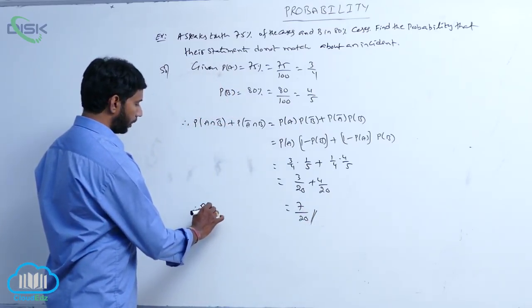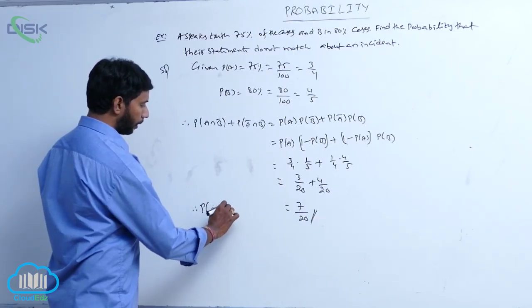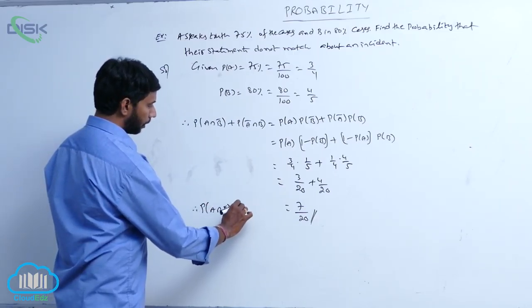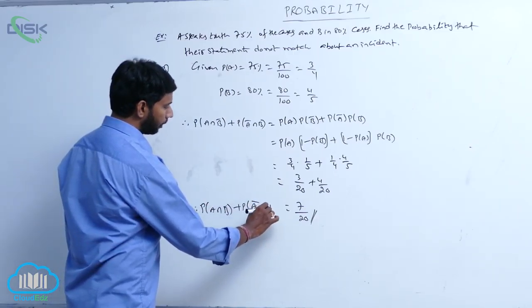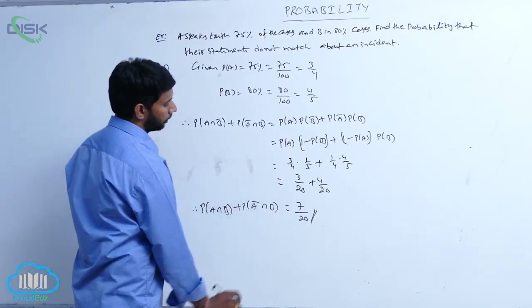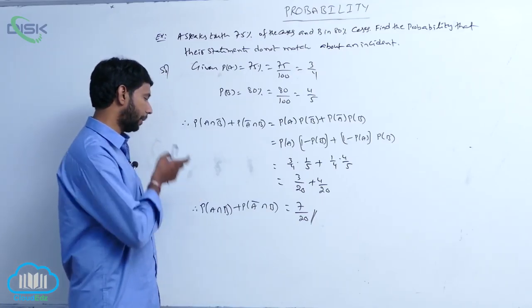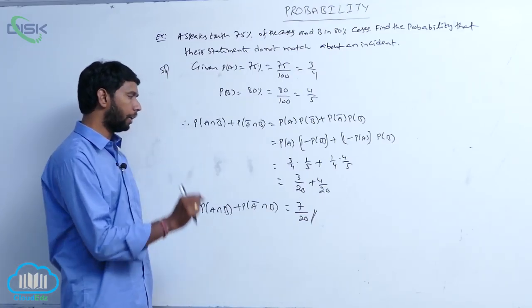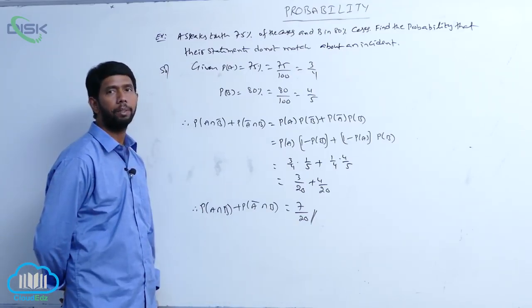This is the required probability: P of A intersection B bar plus P of A bar intersection B is equal to 7 by 20.